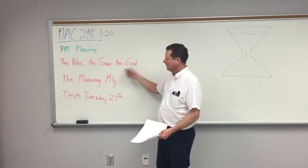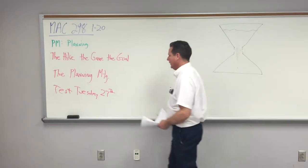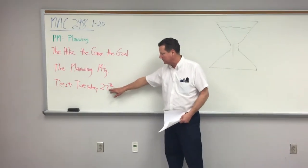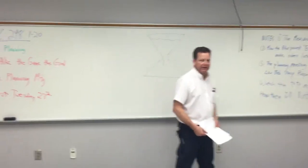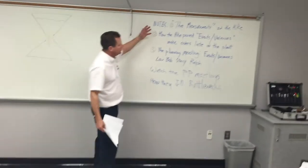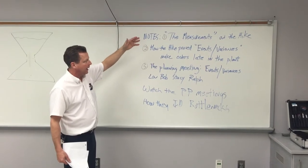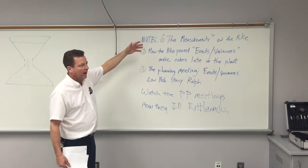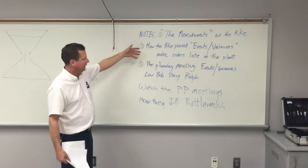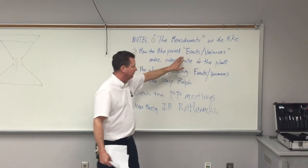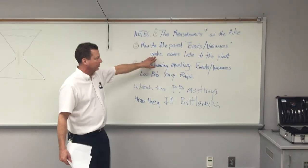The planning meeting resulted in that game they played in the plant with the robots — 25 parts an hour. We're going to have a test next Tuesday the 27th, so I will be doing a review in the next class and tell you what pages of the book you're responsible for. Today's notes covered the measurements on the hike — throughput, inventory, and operational expense in terms of the hike — and how the hike proved they had the phenomena of dependent events and statistical fluctuations, and how that makes orders late in the plant.